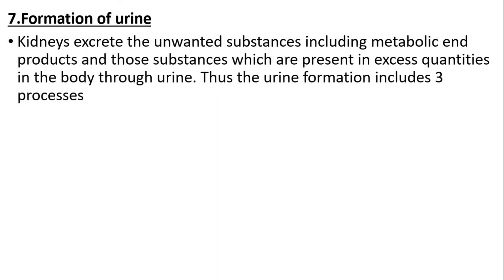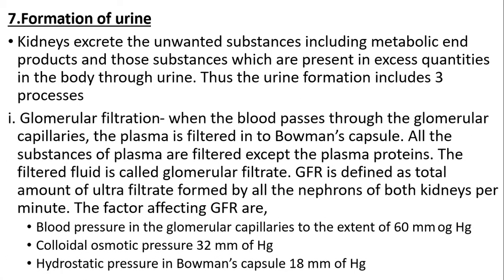Formation of urine: the kidneys excrete unwanted substances including metabolic waste products and those present in excess quantities in the body through urine. Formation involves three processes. First is glomerular filtration: when blood passes through the glomerular capillaries, the plasma is filtered into Bowman's capsule. All substances of plasma are filtered except plasma proteins. The filtered fluid is called glomerular filtrate. GFR is defined as the total amount of ultrafiltrate formed by the nephrons of both kidneys per minute.